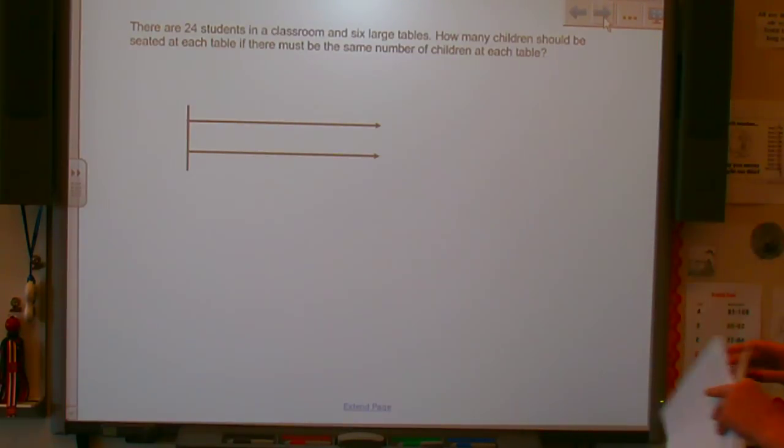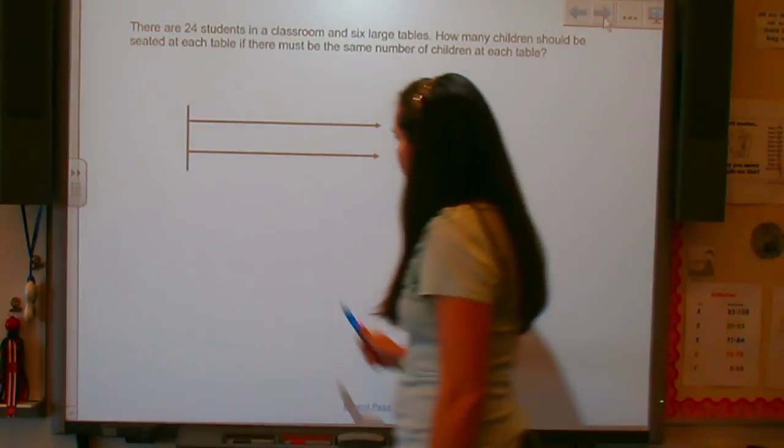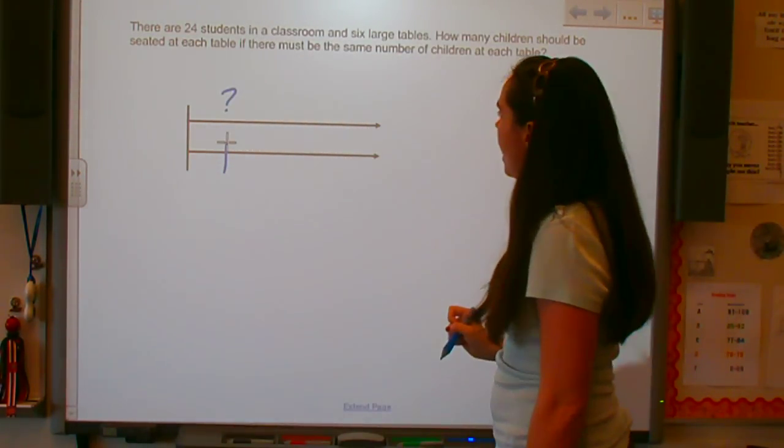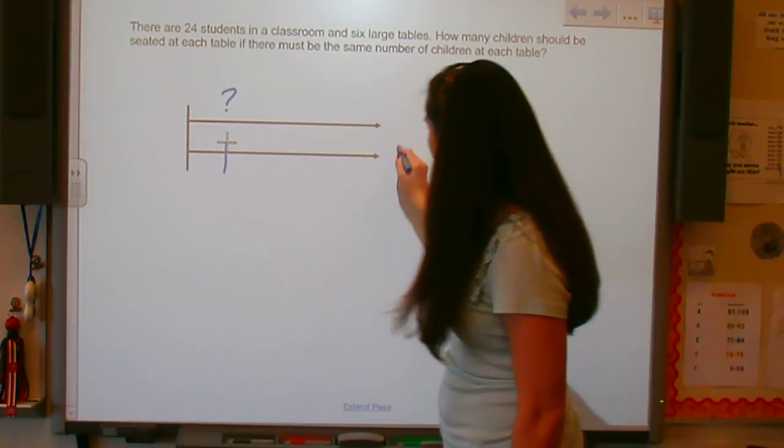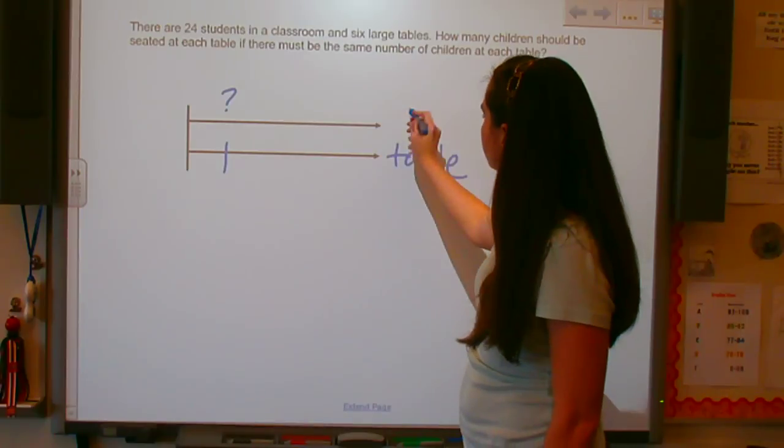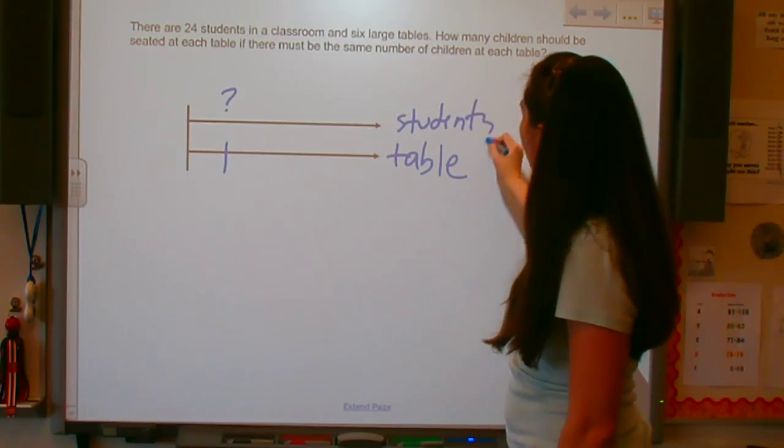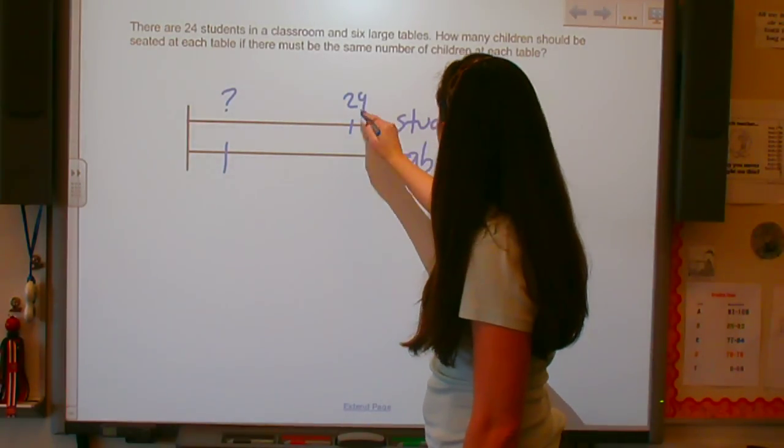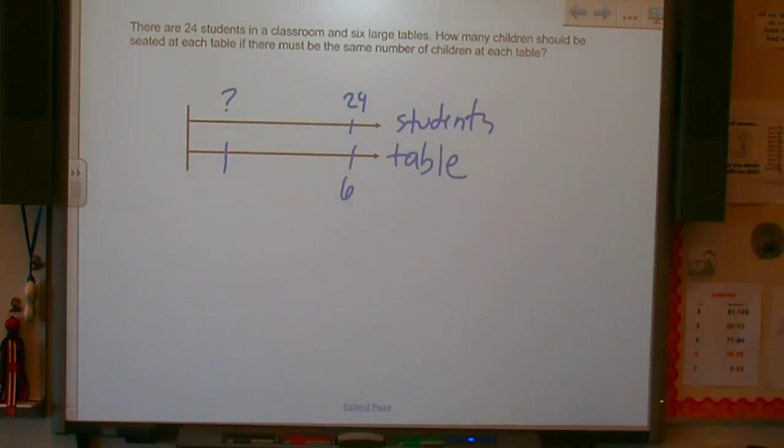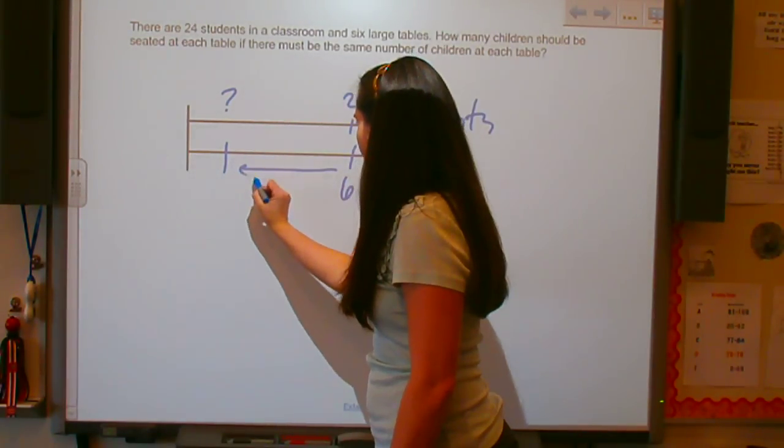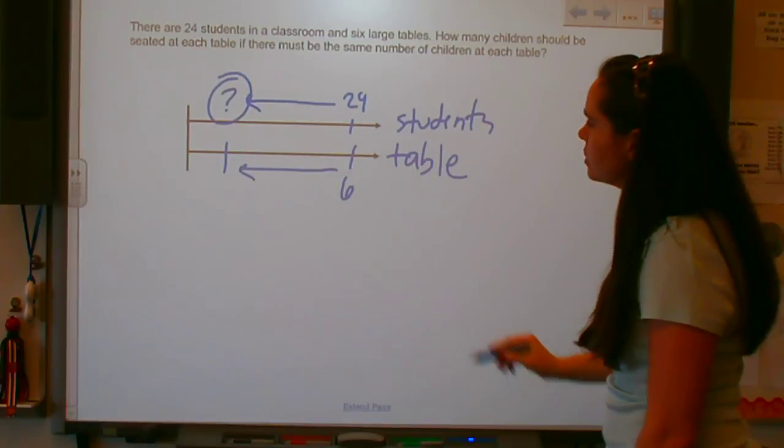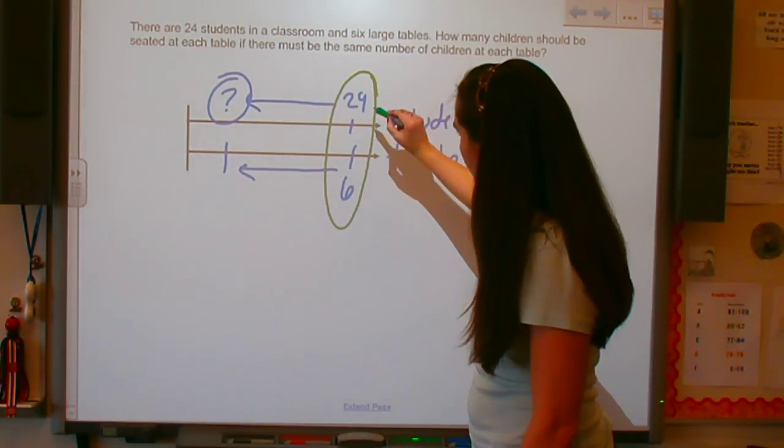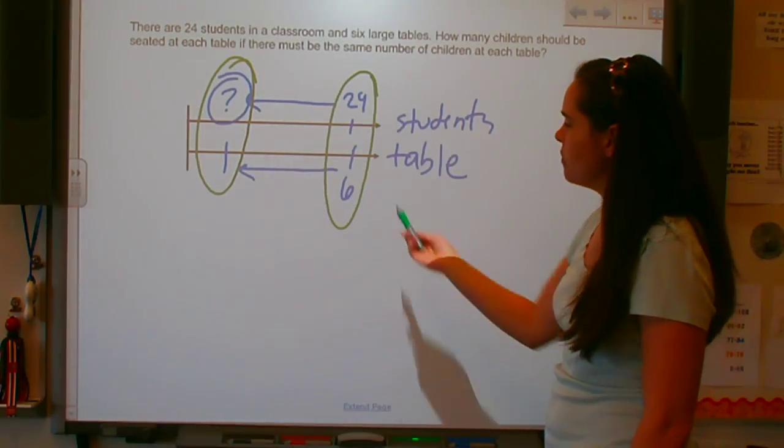Our next example. There are 24 students in a classroom and six large tables. How many children should be seated at each table if there must be the same number of children at each table? So now we have an unknown value for our one. I know that I want to know how many are seated at one table. So this line is table and this line is students. We know that there are 24 students total that are seated at six large tables. So now I'm going backwards on my line because my question mark is over here. I want to use what I know about this relationship to find this relationship. I'm moving left on my number line.